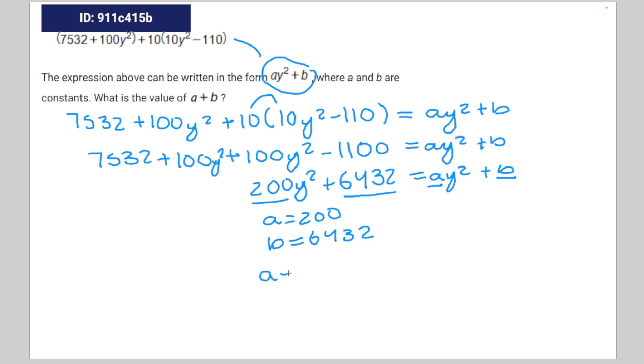So a plus b, the answer of the question is going to be 200 plus 6,432, which is equal to 6,632. And that is the correct answer.